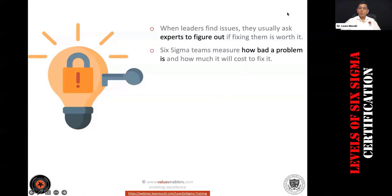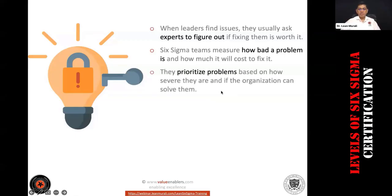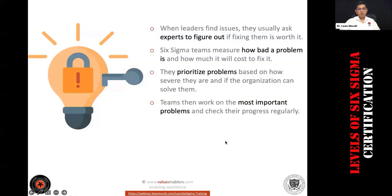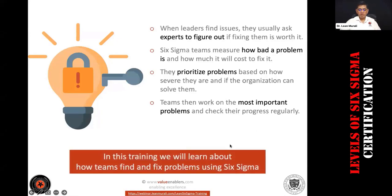When leaders are looking for expert opinions to fix problems, Six Sigma teams can actually help you measure the extent of the problem, how to fix it, and how much it would cost to fix it. They can also prioritize the problems based on the strategic objectives of the organization. The Six Sigma teams work on important problems and check progress regularly.